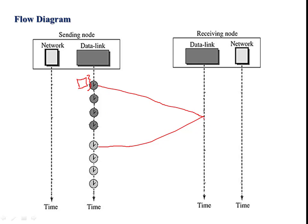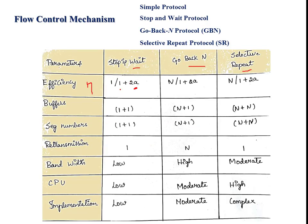The time taken for the last bit of the frame is the propagation delay Tp, and the acknowledgement from the receiver side has the same propagation delay. So the addition of transmission delay and propagation delay is calculated as the efficiency: 1 divided by (1 + 2a). Because only one packet is transmitted, the efficiency is less in stop-and-wait protocol.